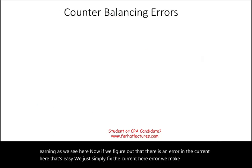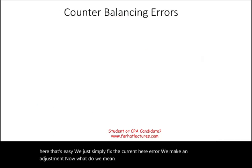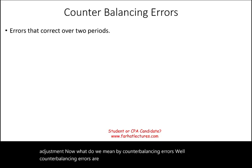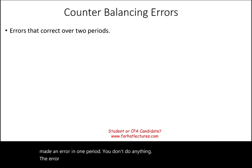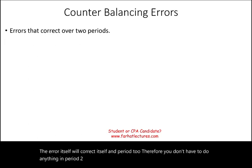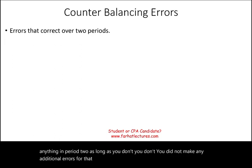What do we mean by counterbalancing errors? Counterbalancing errors are errors that correct themselves over two periods. You made an error in one period, you don't do anything, and the error corrects itself in period two. Therefore, you don't have to do anything in period two, as long as you did not make any additional errors for that particular year. We're going to look at a few examples that illustrate the point.